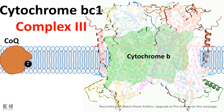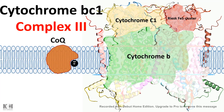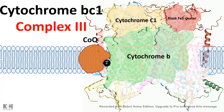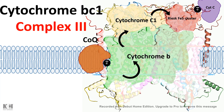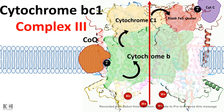The cytochrome BC1 complex has three major components: cytochrome B, cytochrome C1, and the Rieske iron-sulfur cluster. Coenzyme Q delivers the electron to this complex, and the electron moves through cytochrome B, then cytochrome C1, and ultimately reaches the Rieske iron-sulfur complex. From there, the electron is transferred to cytochrome C, which is another mobile electron carrier. In the same process, four hydrogen ions are pumped into the intermembrane space.